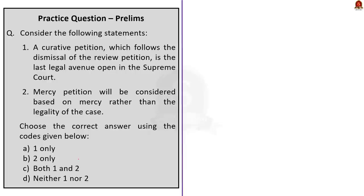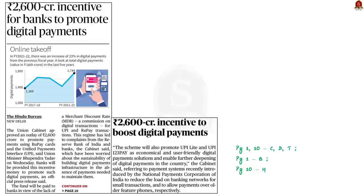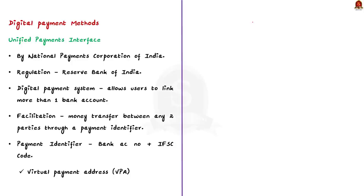That's all regarding the curative petition article. Now look at this next article. Yesterday, the Union Cabinet approved an outlay of rupees 2,600 crore to promote payments using RuPay cards and Unified Payments Interface, which is UPI. An official press release by the government said that this incentive money will be provided to banks to promote digital payments. In this context, we will learn about the different modes of digital payments available in India.